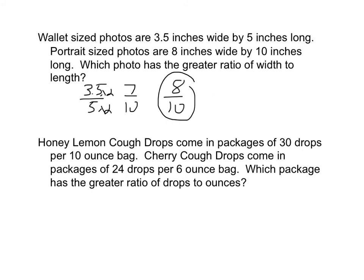Why don't you go ahead and pause the video and then try this last problem on your own. Honey lemon cough drops come in packages of thirty drops per ten ounce bag. While cherry cough drops come in packages of twenty-four drops per six ounce bag. Which package has the greatest ratio of drops to ounces?